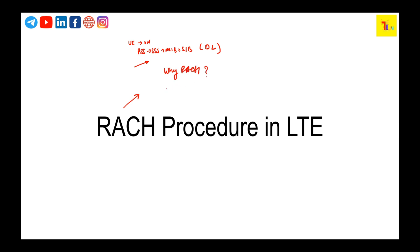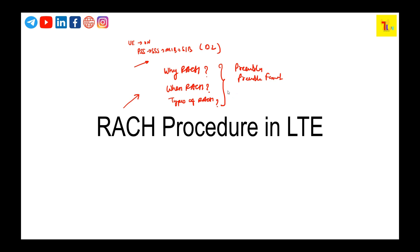Going forward we will address several questions: why RACH is required, when RACH is going to happen and on what particular occasion, then the types of RACH. We will also look at the preamble, preamble format, how this preamble is generated, and when and where exactly we are going to transmit this RACH preamble. We will go through these sequence by sequence.